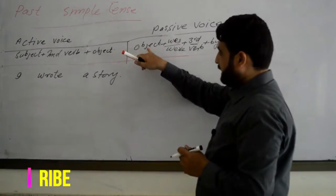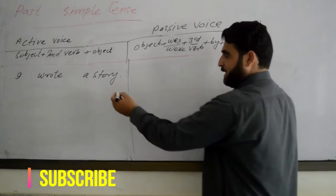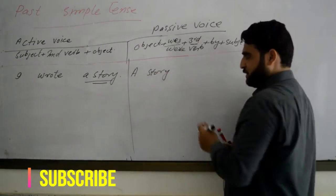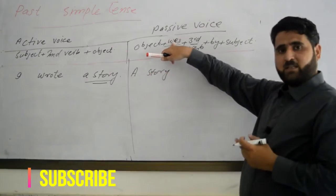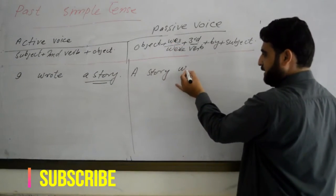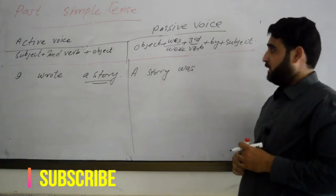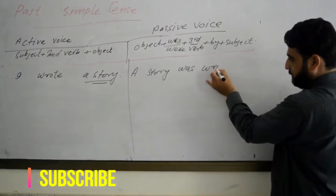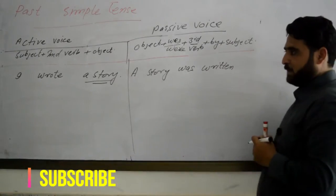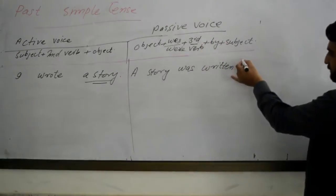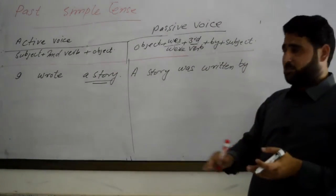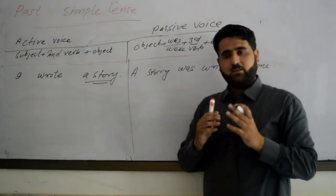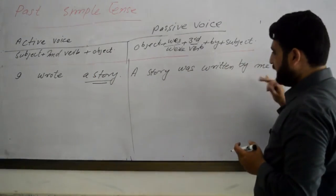जिस तरह हमने कहा है — यहाँ पे Object आएगा. हमारे पास Object है: A Story. तो यहाँ पे आ जाएगा: A Story. यह Singular Noun है तो हम Was लगाएंगे. फिर यहाँ पे Third Form — Wrote का Third Form क्या है? Written. तो यहाँ पे Written लगाएंगे. इसके बाद By लगाएंगे. और Subject 'I' Object की जगह पर आ जाएगा, तो यह Me होगा. I wrote a story → A story was written by me.